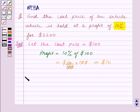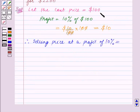So therefore, selling price at a profit of 10% is equal to the cost price which is $100 plus the profit which is $10 and this is equal to $110.